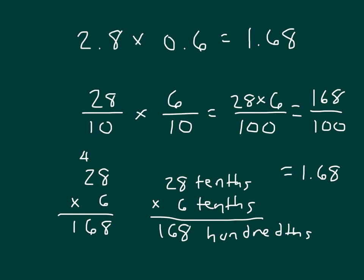We can express that as a decimal as 1 and 68 hundredths, writing that improper fraction as a mixed number, then expressing it as a decimal. That's also a good strategy to use.